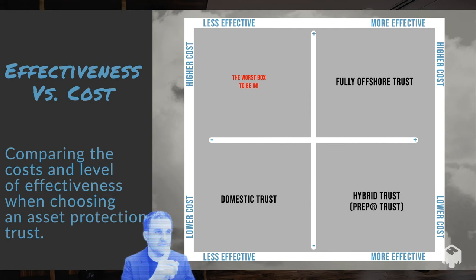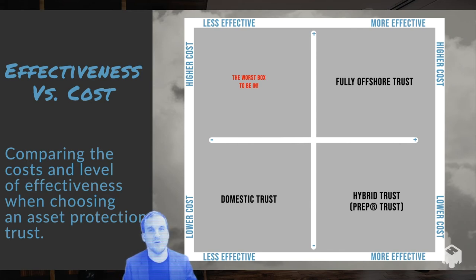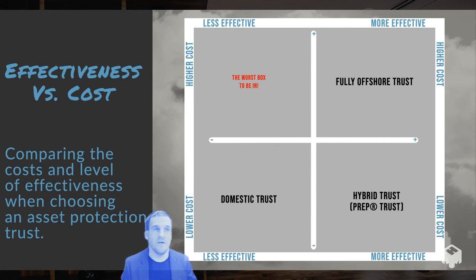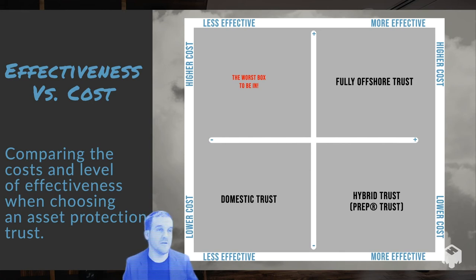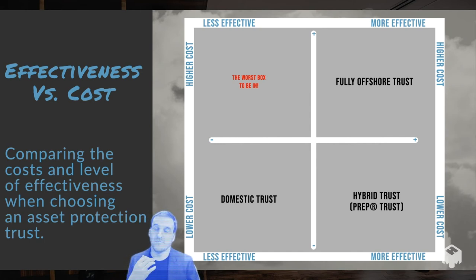Going diagonal down, we have lower cost and less effective — that would be your domestic asset protection trust. A domestic asset protection trust might cost less to set up than a fully offshore trust, but it might not. I certainly know people who charge more to set up the domestic trust than you would pay for a typical offshore trust. The domestic trust is less effective because of the U.S. court system, and we've talked about this a lot.